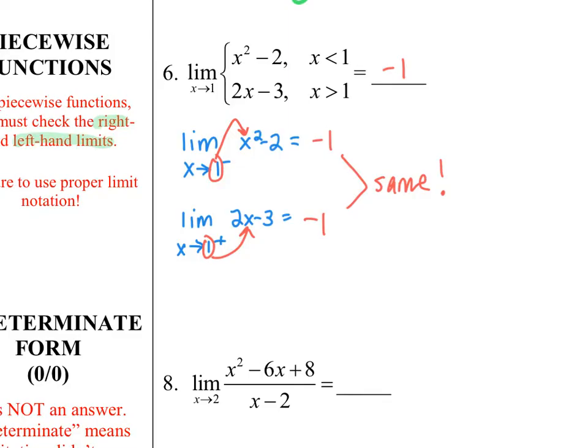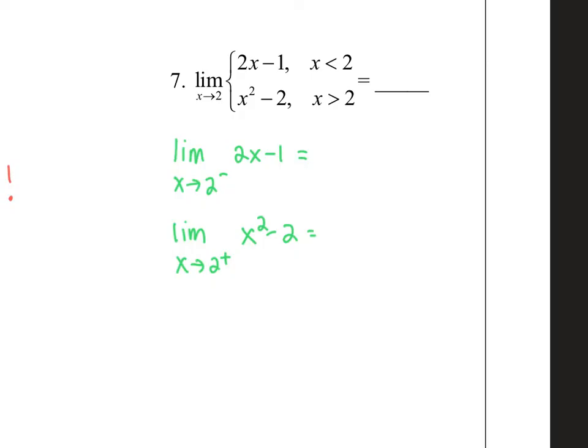Go ahead and pause the video and see if you can do number 7 and number 8. Here are my two one-sided limits. Here I'm evaluating the limit as x approaches 2 from the left. And my answer here ends up being 3. My right-hand limit, evaluating 2 from the right, my answer here ends up being 2. The fact that these are not equal means the general limit does not exist.